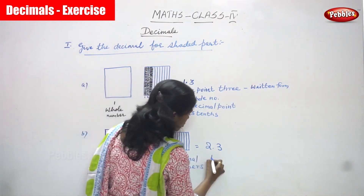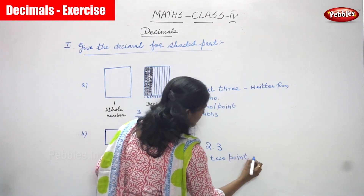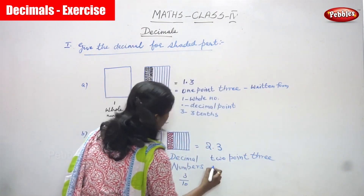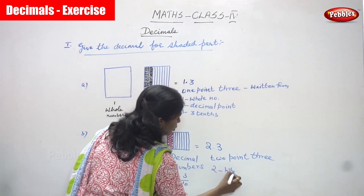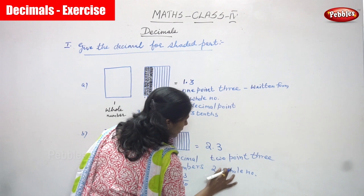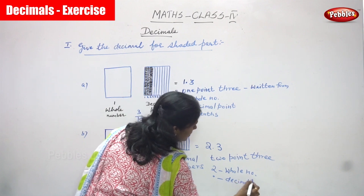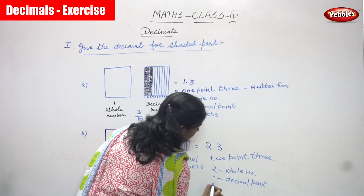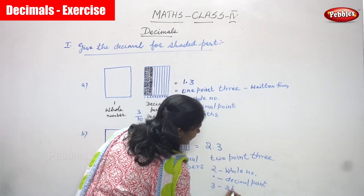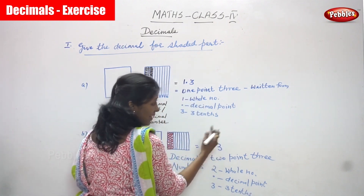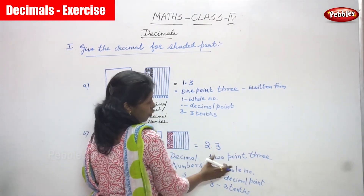So how are we going to write 2.3? You can read it as 2.3, and this is also the written form. Two is a whole number, point is the decimal point, and 3 — after the point, the first digit — how could you read it? Three tenths. Suppose the number is 4, it would be 4 tenths; if it's 5, it's 5 tenths. This is the exact decimal form.